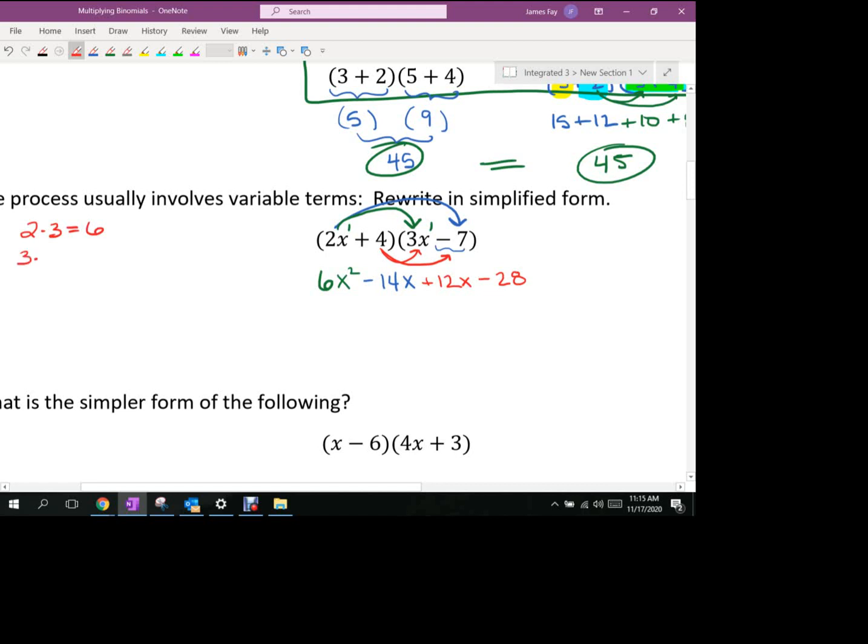Now, just so we understand this, if I go 2 times 3, that gives me 6, right? Does 3 times 2 still give me 6? Does anybody remember what that property is? Commutative. So the commutative property works with multiplication. So if I would take 3x minus 7 times 2x plus 4, do it in that order, I'm going to get the exact same thing.